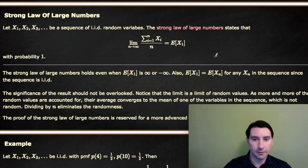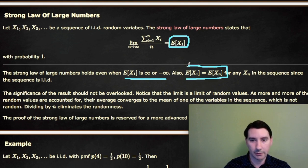This also works if the expected value is infinity or negative infinity. And since these random variables are IID, in other words they have the same distribution, I just used E(x1), but it's the expected value of any one of the random variables.